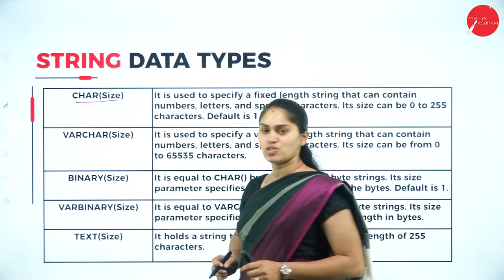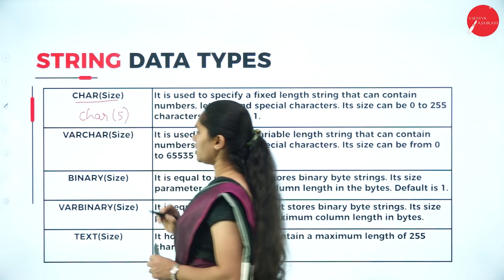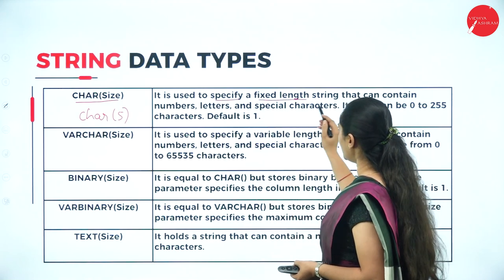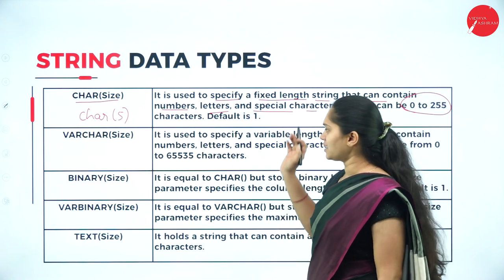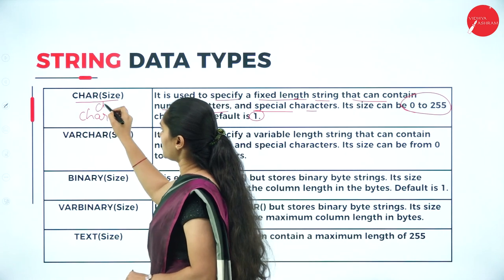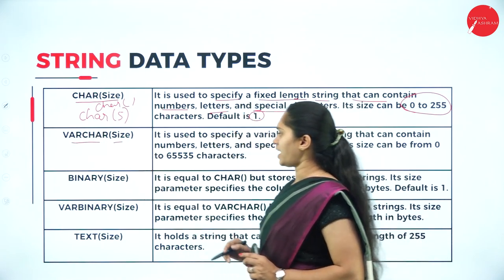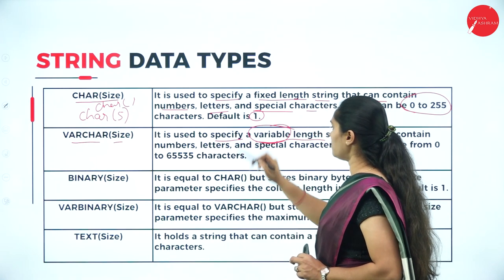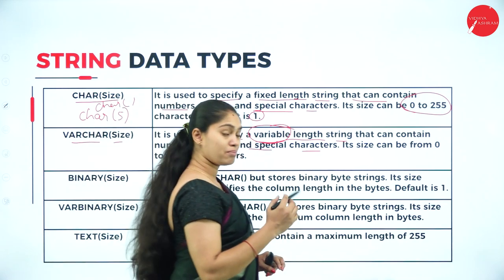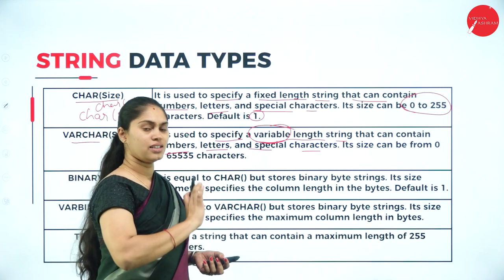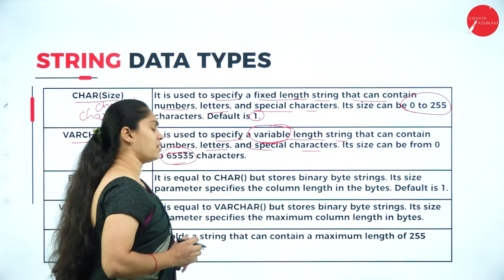The first string data type is CHAR(size). We specify a data type called char with its size in brackets — for example, char(5) allows storing up to 5 characters. It is used to specify a fixed-length string that can contain numbers, letters and special characters, with a size range of 0 to 255 characters; the default is 1. Then we have VARCHAR(size), used to specify a variable-length string that can also contain numbers, letters and special characters. Unlike char, varchar can store up to 65,535 characters.